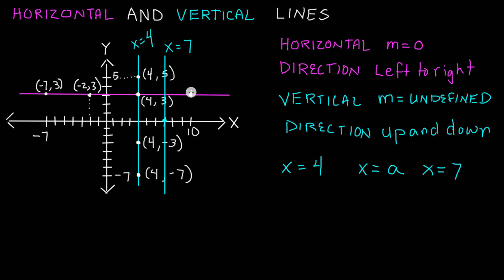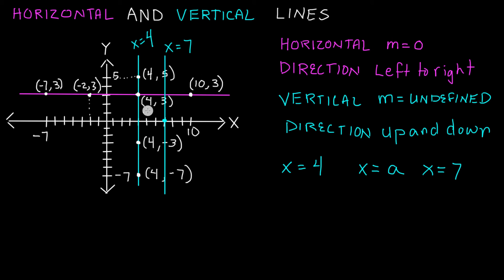Looking at the last point, if we go over ten units in the x direction, that gives us an x component of ten. And we go up three units in the y direction, giving a y component of three. So looking at the pattern of the points plotted on this horizontal line, no matter what value x has — negative seven, negative two, four, or ten — it doesn't matter, because all of the corresponding y values are equal to three.